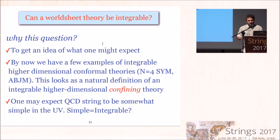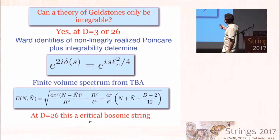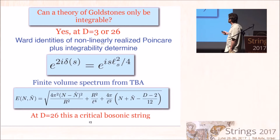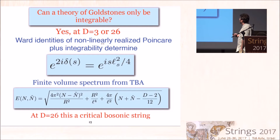Let's start with the simplest question: can a theory of Goldstones only — the transverse modes — be integrable? The answer is yes in 26 dimensions or 3 dimensions. In both cases the corresponding S-matrix is completely fixed by Ward identities of non-linearly realized Poincaré symmetry plus integrability. If one takes this phase shift and calculates the corresponding finite volume spectrum, for d=26 one finds a formula which one immediately recognizes as the spectrum of the critical bosonic string.